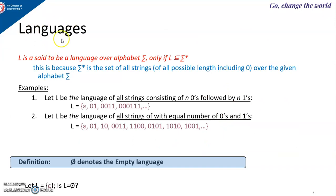The next terminology is languages. A language is represented by the letter L. L is said to be a language over the alphabet sigma only if L is a subset of sigma star. Sigma star is the set of strings of any length from sigma, and a subset of that sigma star will form the language.